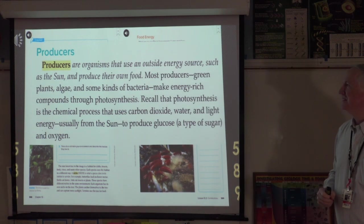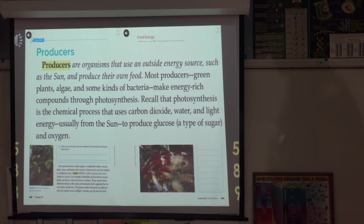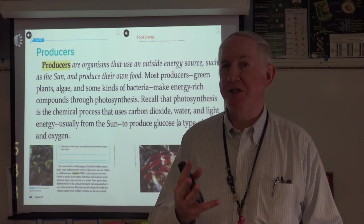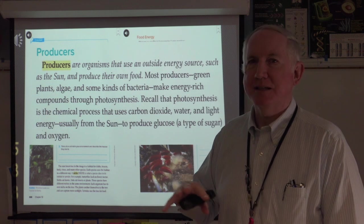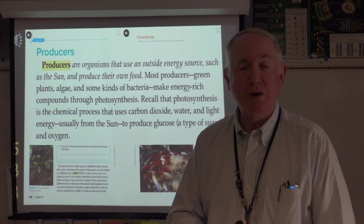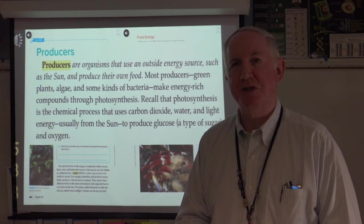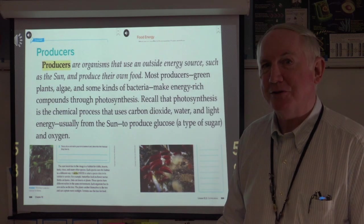Producers are organisms that use an outside source of energy, such as the sun, and produce their own food. Most producers — green plants, algae, and some kinds of bacteria — make energy-rich compounds through photosynthesis. Photosynthesis is the chemical process that uses carbon dioxide, water, and light energy, usually from the sun, to produce glucose and oxygen. Producers are always the base of any food chain or food web. The only exception is in the deep ocean at hydrothermal vents, where chemosynthesis occurs — bacteria metabolize hydrogen sulfide instead of using water and sunlight.